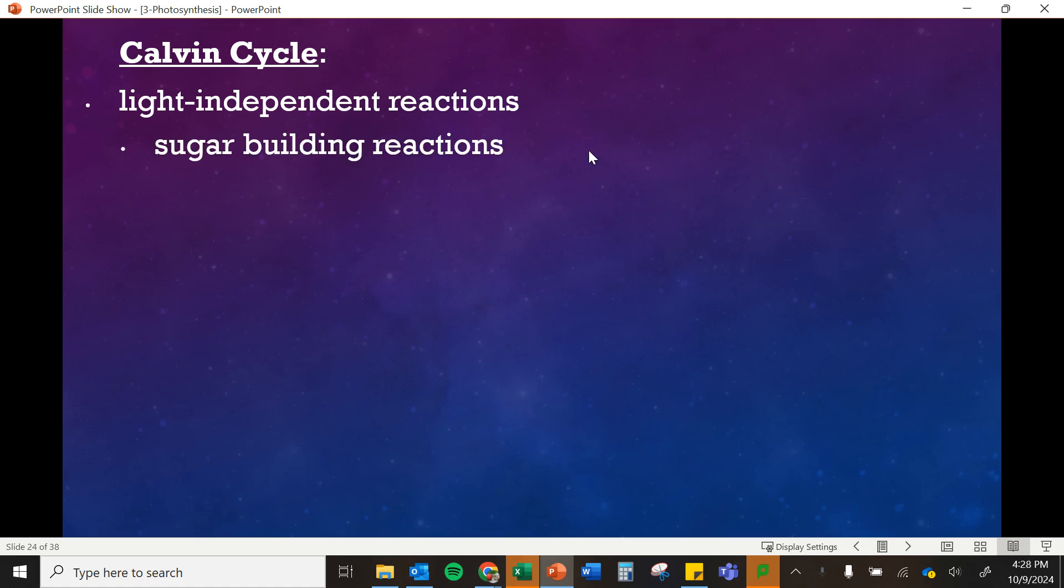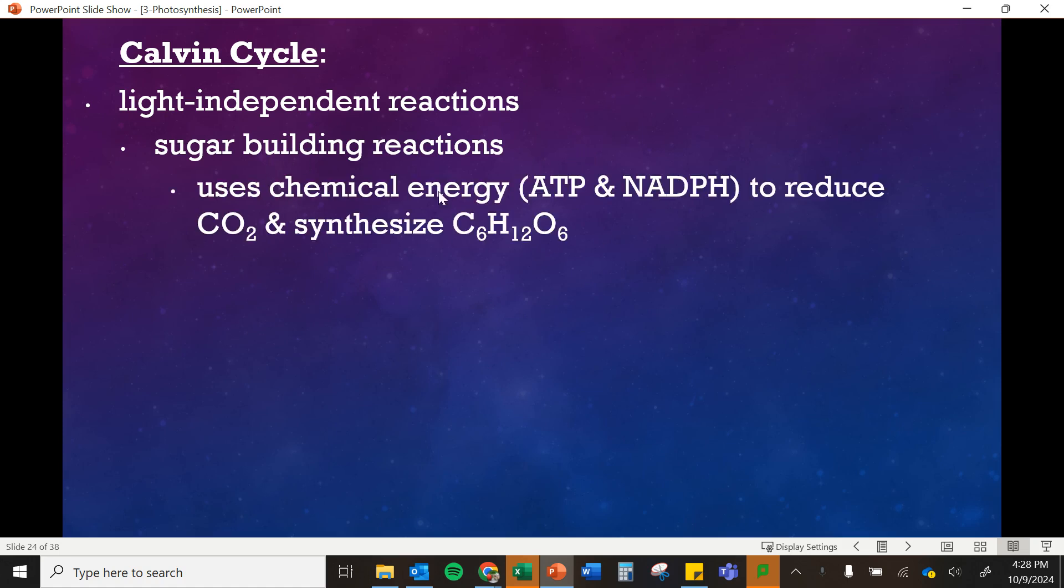This is where we are taking that carbon dioxide and building sugar. It's using that ATP and NADPH that we created and formed in the light-dependent reactions, and it's used to do a reduction, which is a chemical reaction, basically just turning carbon dioxide, CO2, into C6H12O6, which is glucose.